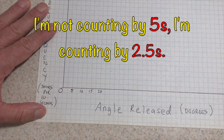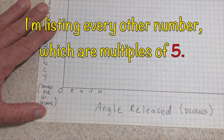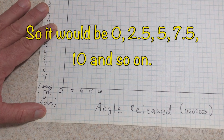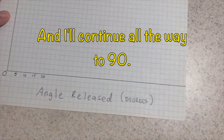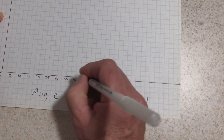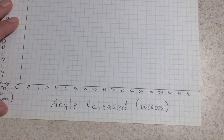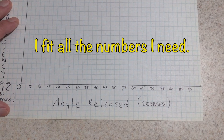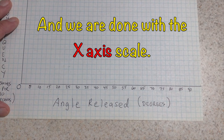I'm not counting by fives — I'm counting by two-and-a-halves. It's just that I'm only listing every other number, which would be multiples of five. So it would be zero, two-and-a-half, five, seven-and-a-half, ten, and so on, continuing all the way to 90. I fit all the numbers I need, they're evenly spaced, and we are done with the x-axis scale.